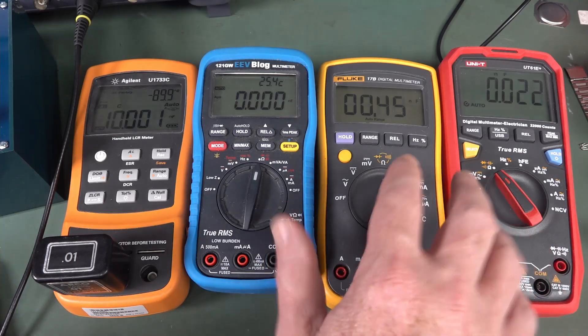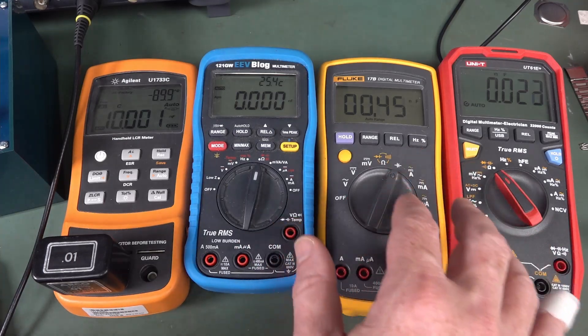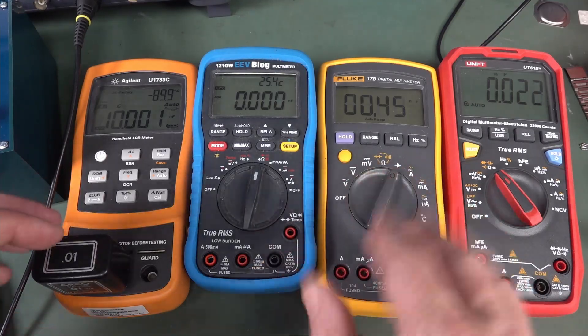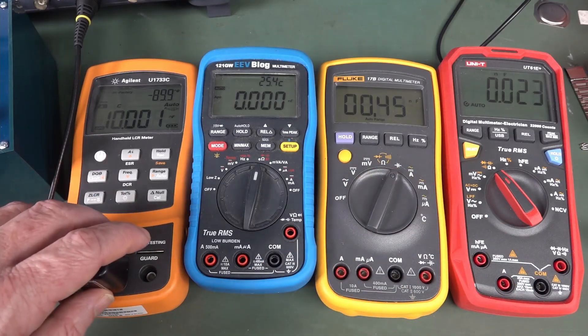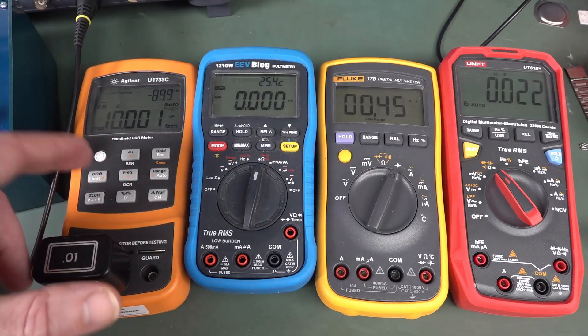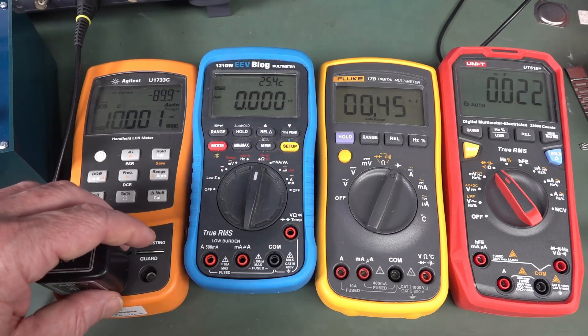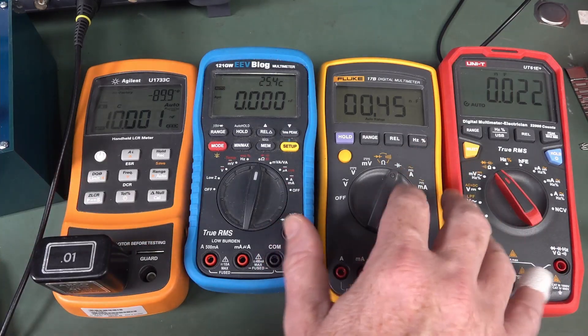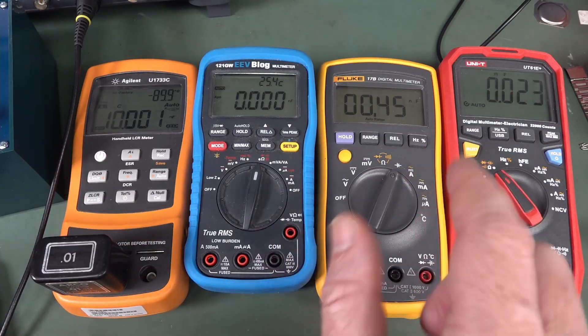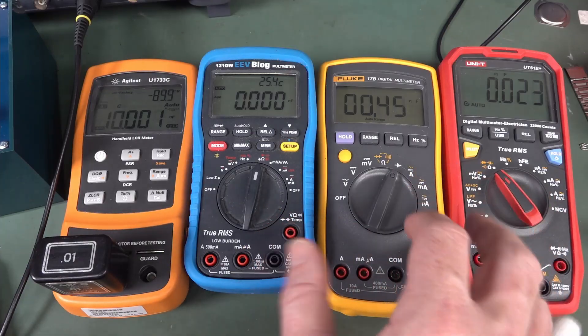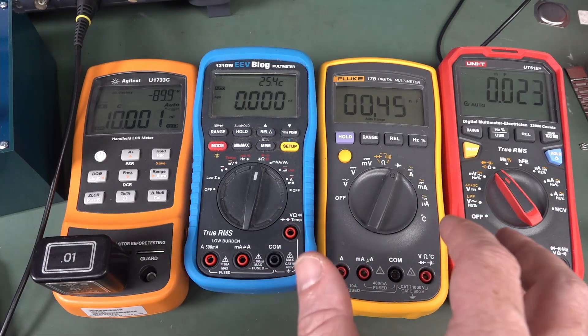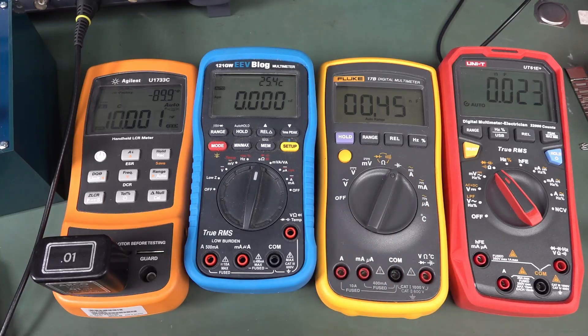But a little-known feature of multimeters is that they actually test at, while not specific fixed frequencies like a good LCR meter does, this one can measure 100 Hz, 120, 1 kHz, 10 kHz, and 100 kHz, but multimeters also test at frequency as well, which means you might be able to press them into service for measuring inductors as well.